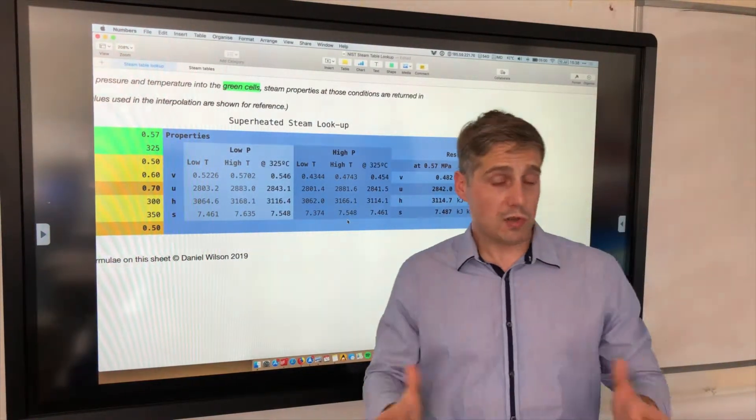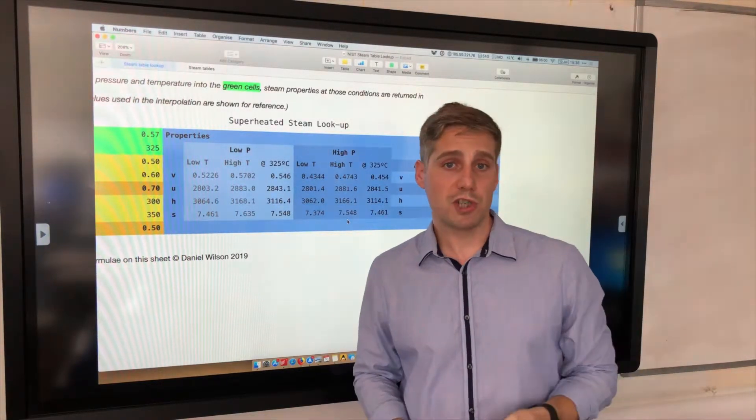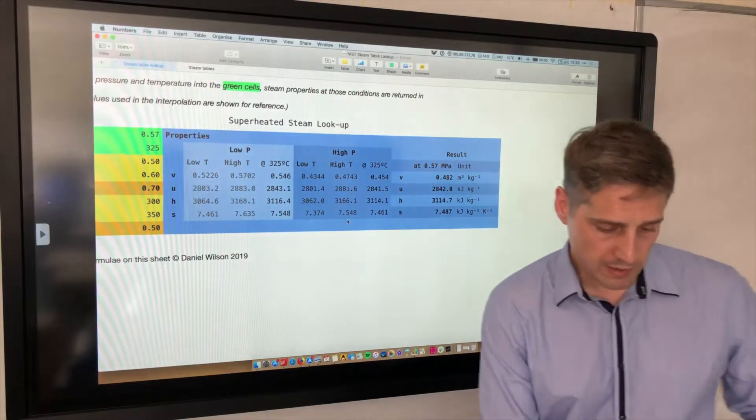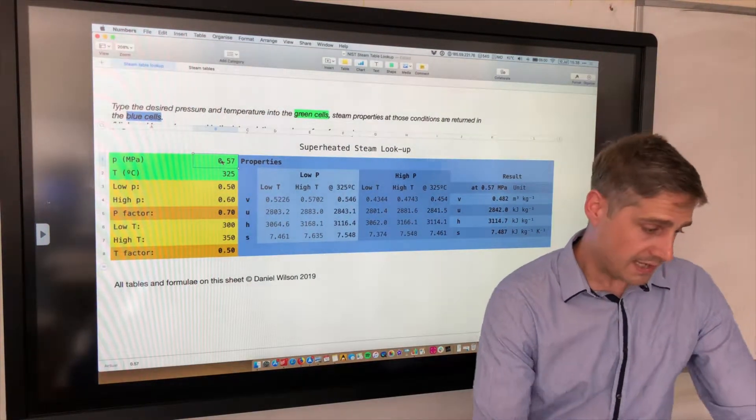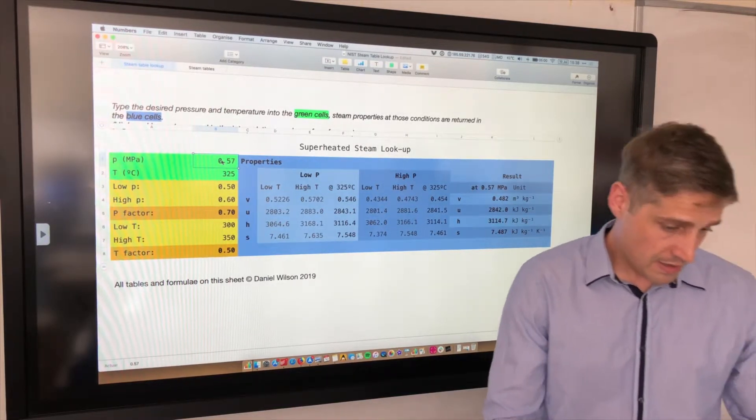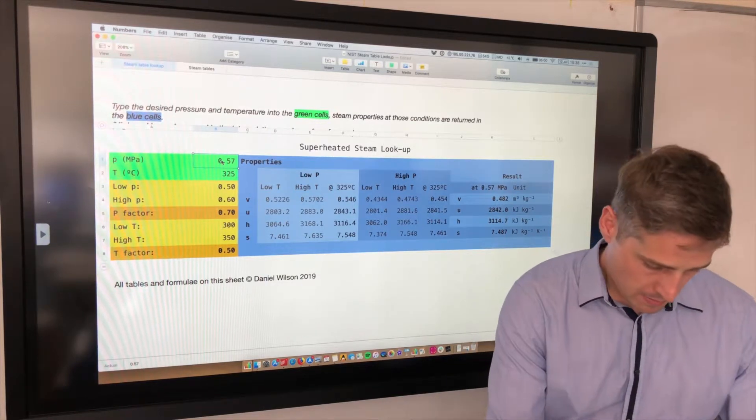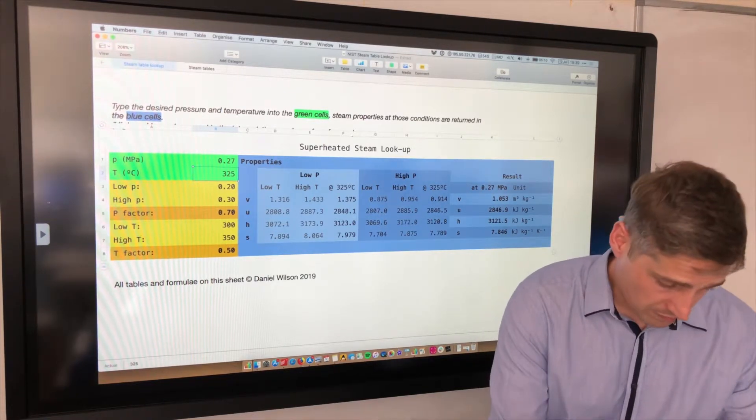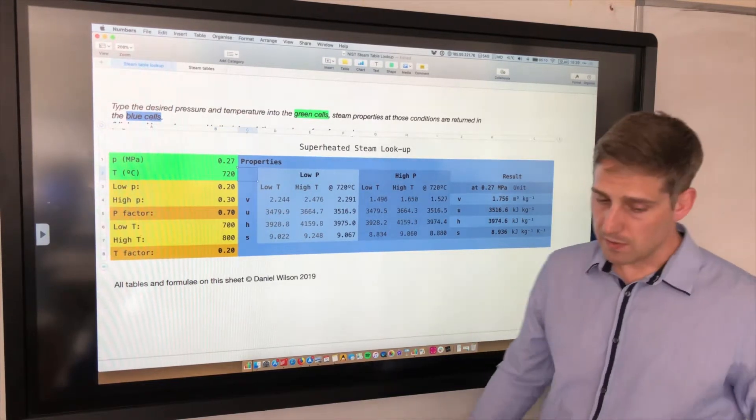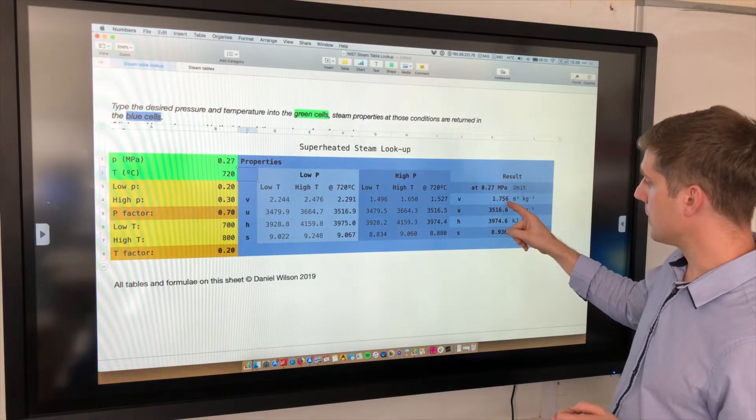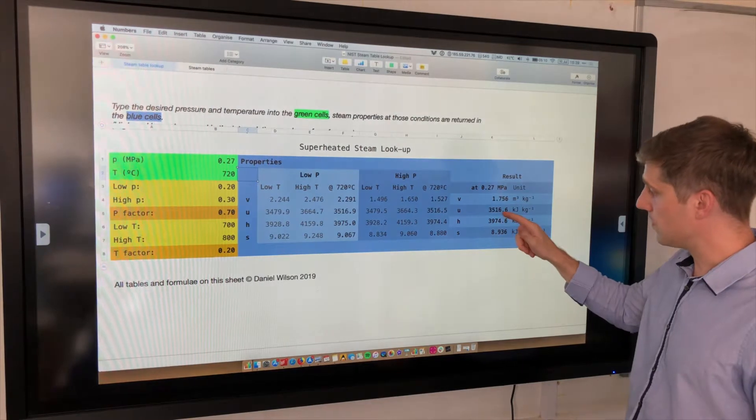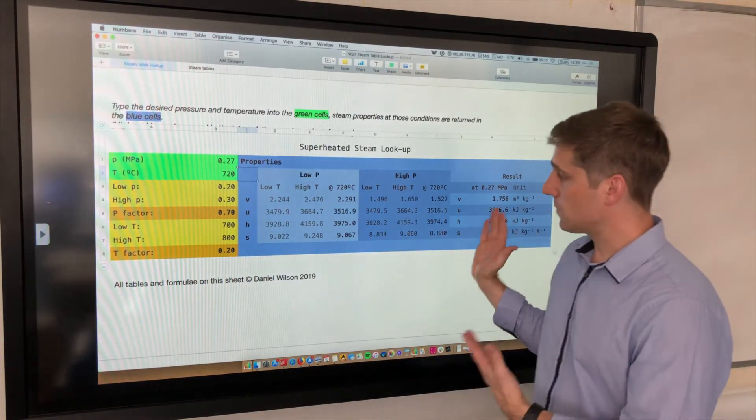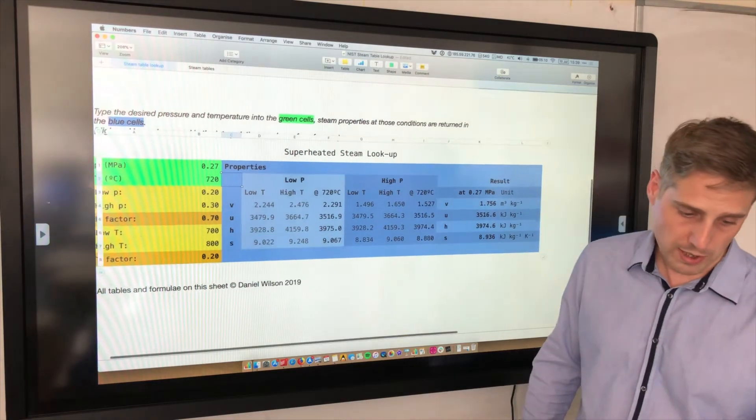If you're using the superheated steam tables and you have to do double interpolation, I'm sure you appreciate that's quite a lot of work, unless you have a similar model. That's the idea of this spreadsheet - narrowing the amount of work down to just putting in the data that you're interested in. Let's try a different pressure. Let's go for something like 0.27. That's between two pressures. We could go for a temperature of 720. Then we get the specific volume, 1.756. The specific internal energy, 3,516. 3,974 for the enthalpy, 8.9 for the entropy. That's the double interpolation. Very quick and easy.